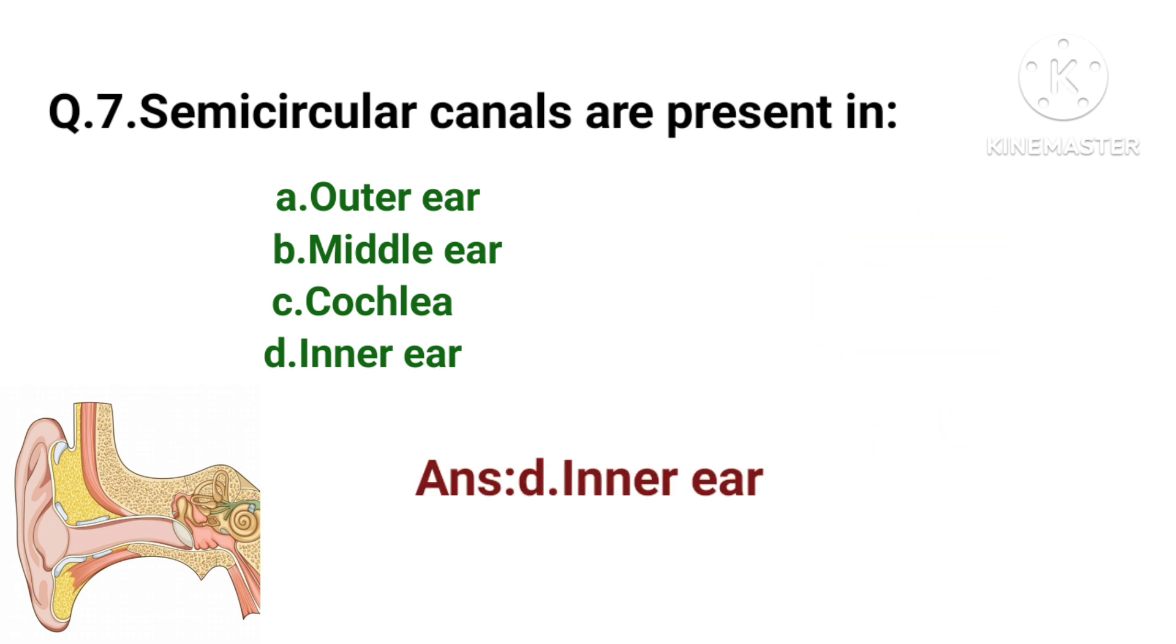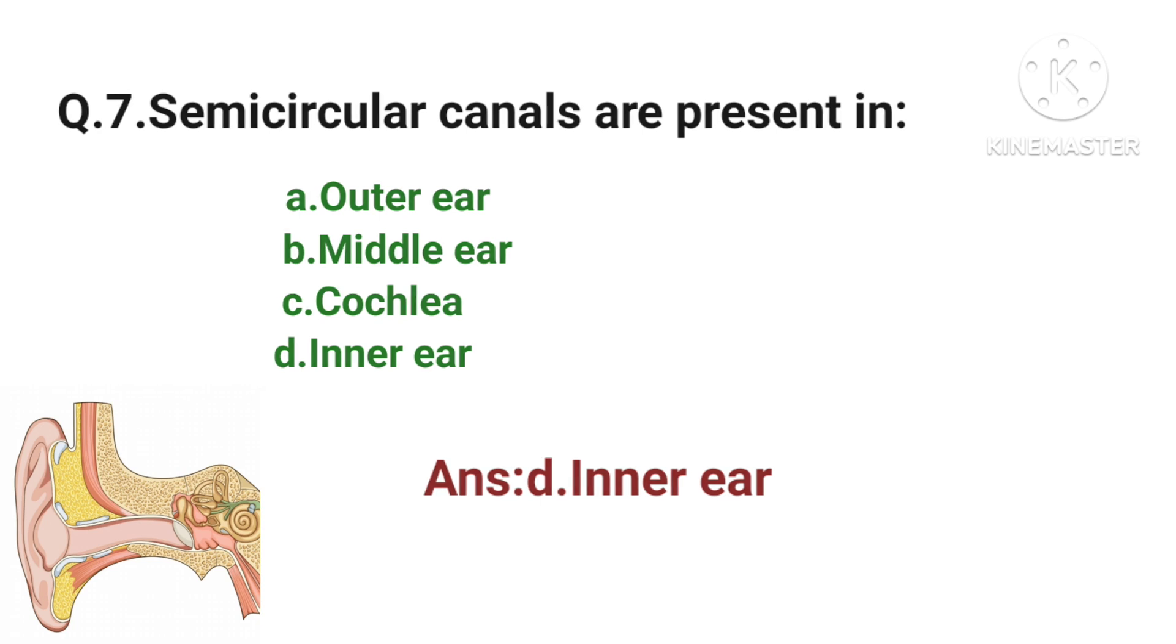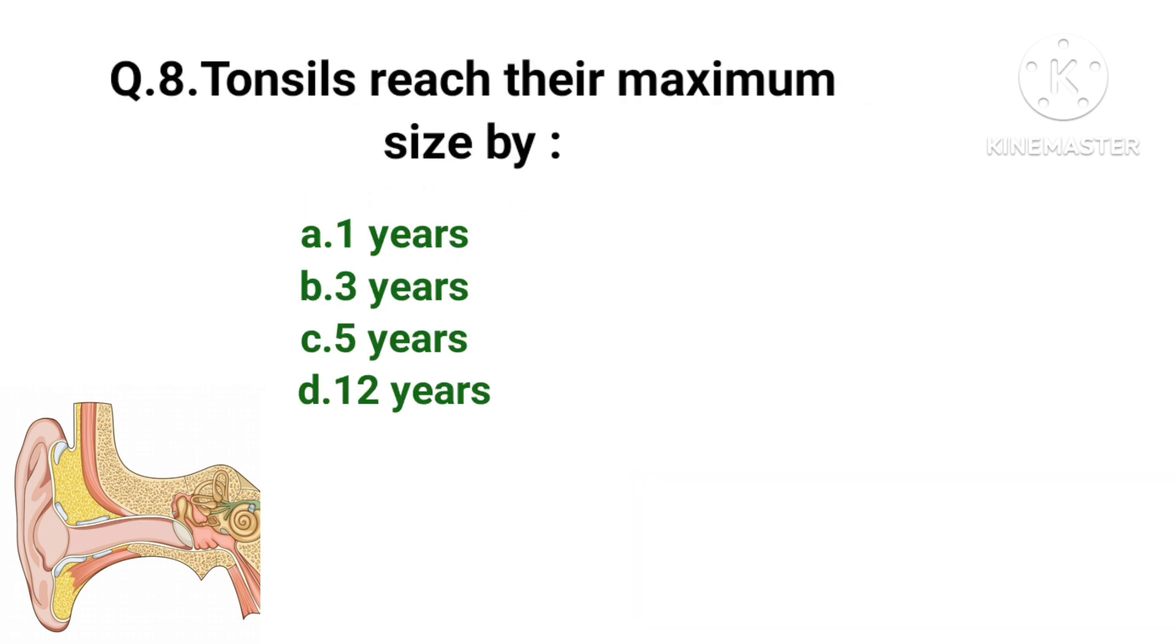Semi-circular canals are present in inner ear. Tonsils reach their maximum size by: 1 year, 3 years, 5 years, or 12 years. Tonsils reach their maximum size by 12 years.